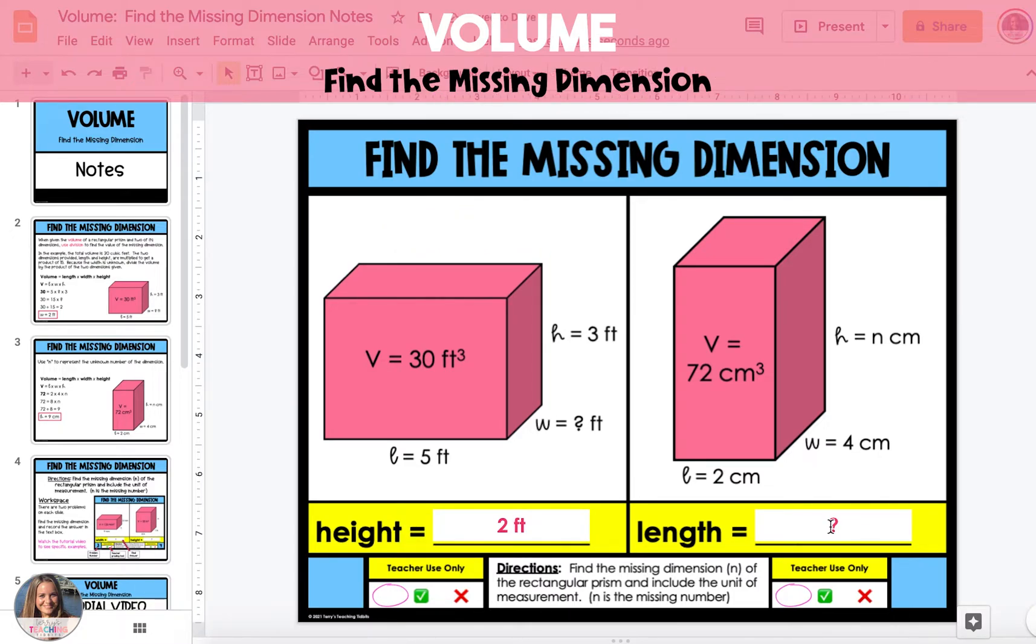In the second example, the volume is 72 cubic centimeters. If volume is equal to length times width times height, then 72 is equal to 2 times 4 times n. So 72 is equal to 8n.